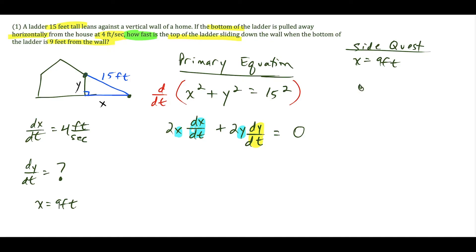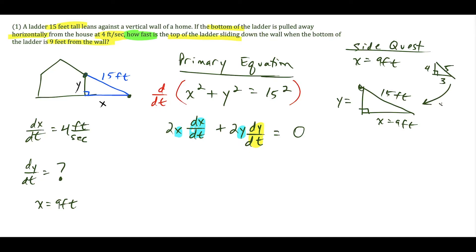On our side quest, we need to find Y specifically when X equals 9 feet. The ladder is 15 feet long. This corresponds to a 3-4-5 triangle multiplied by 3: 3 times 3 is 9, 5 times 3 is 15, so 4 times 3 tells us Y equals 12 feet. Now we have the Y value to plug back in and solve for the unknown rate.